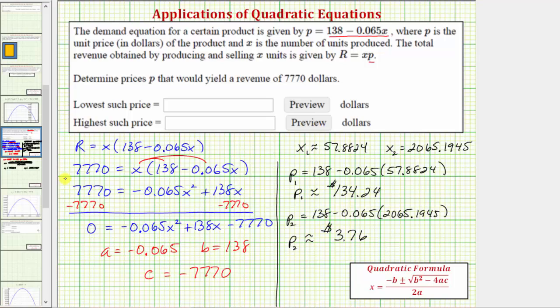So if the product is priced at either of these two amounts, the revenue will be $7,770. And we're asked to enter the lowest price here and the highest price here. The units of dollars are already provided. So we'll enter 3.76 here and 134.24 here. I hope you found this helpful.